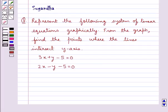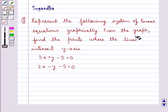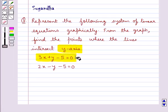Hello and welcome to the session. In this session, we discuss the following question which says: represent the following system of linear equations graphically. From the graph, find the points where the lines intersect the y-axis. The system of linear equations given is 3x plus y minus 5 equal to 0, and 2x minus y minus 5 equal to 0.